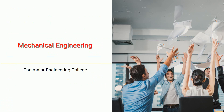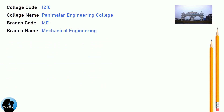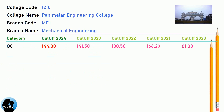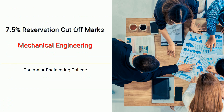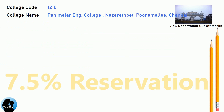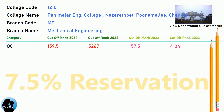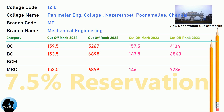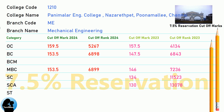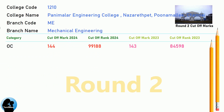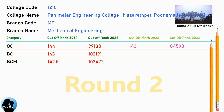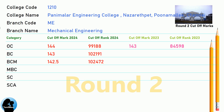TNEA 7.5 Reservation Cut-off for Panimalar Engineering College in Mechanical Engineering. TNEA 8.5 Reservation Cut-off for Panimalar Engineering College in Mechanical Engineering. TNEA Round 2 Cut-off for Panimalar Engineering College in Mechanical Engineering.